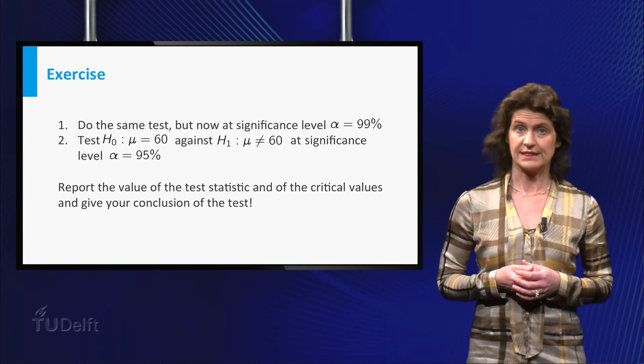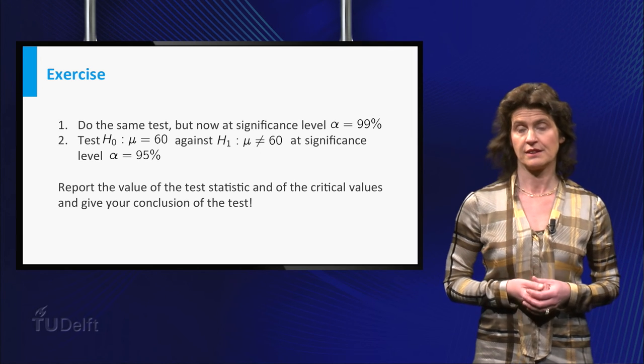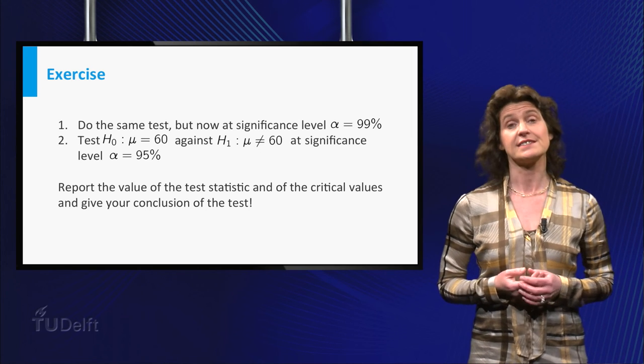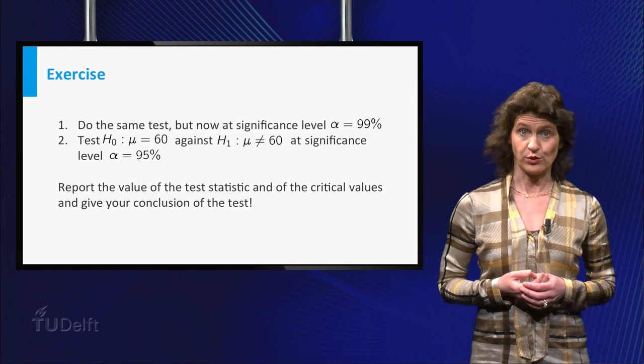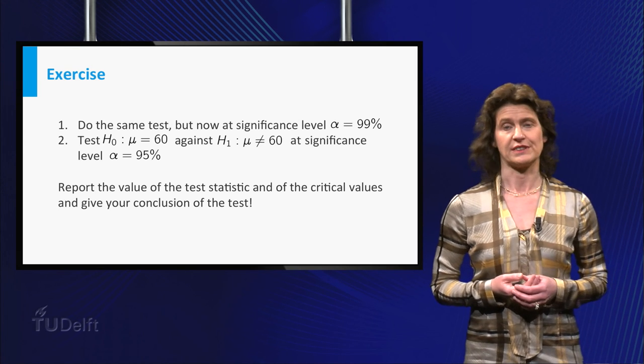And test the null hypothesis that mu equals 60 against the alternative hypothesis that mu is not equal to 60 at a significance level of 95 percent. Report the value of the test statistic and of the critical value for the test and give your conclusion of the test.